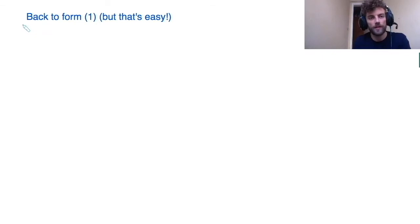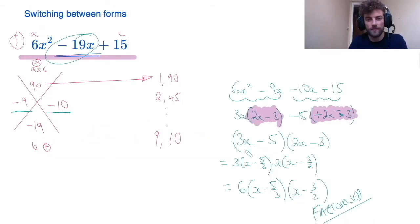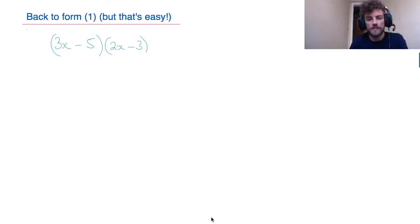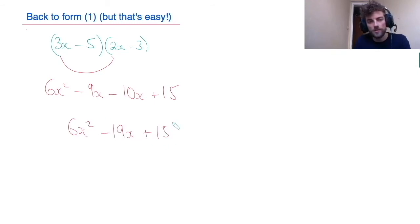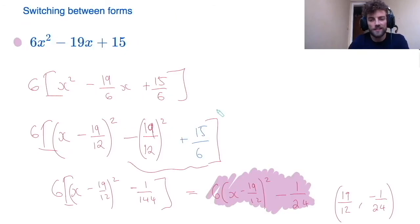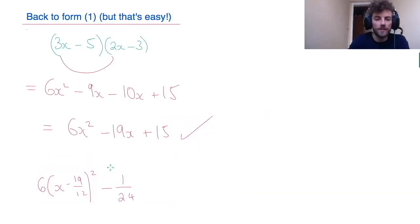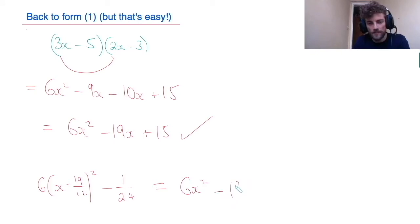For completion, I should verify I know how to get back to form 1. That's really easy — just expand the brackets. For the factorized form: 3x times 2x gives 6x squared; 3x times minus 3 is minus 9x; minus 5 times 2x is minus 10x; and minus 3 times minus 5 is plus 15. And I'm back into form 1. Similarly, expanding the complete-the-square form and collecting like terms returns me to form 1.